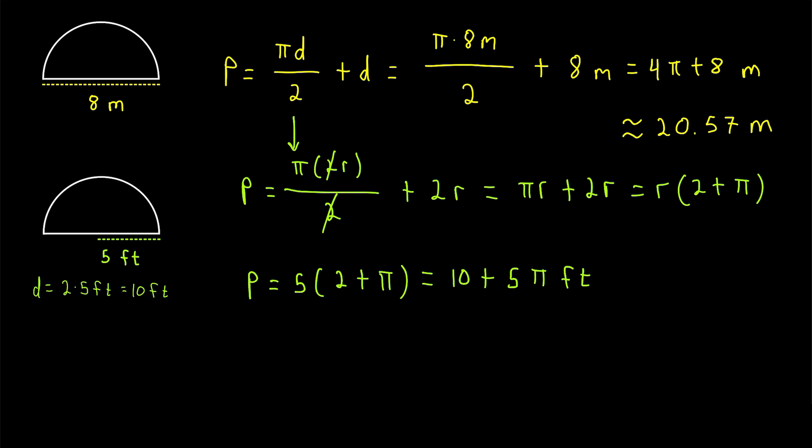And if we want to round this to the nearest hundredth, that is approximately 25.71 feet. If we had used our diameter and the original diameter formula, we would have got 10 times pi over 2, which would be 5 pi, plus that diameter of 10. So you can see we would have got the same thing.